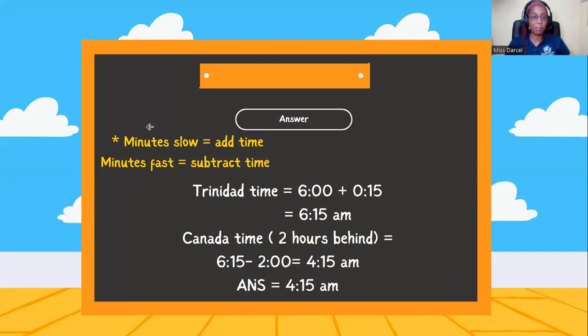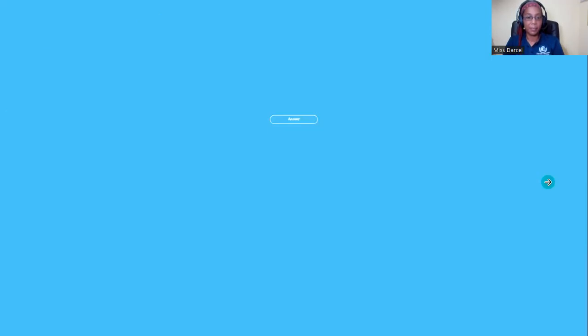All right. So quick note, minutes slow means that we have to add time. Minutes fast means that we have to subtract time. So it's 15 minutes slow. So Trinidad time is actually 6:15 a.m. And Canada is two hours behind. So 6:15 minus two hours is 4:15 a.m. So time in Canada is 4:15 a.m. On to the next.